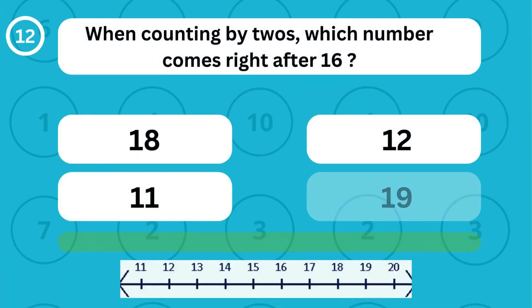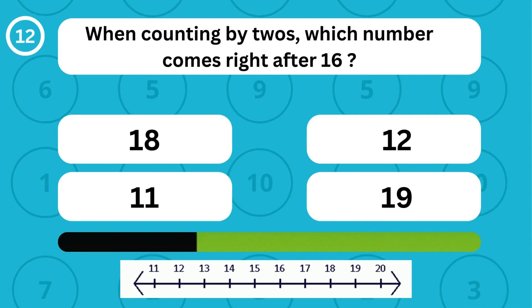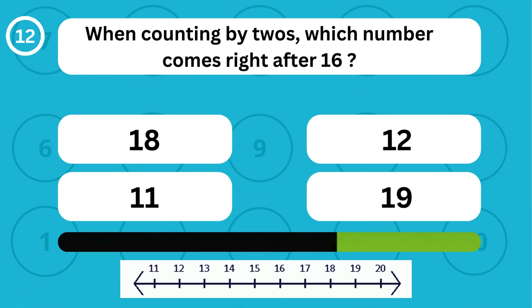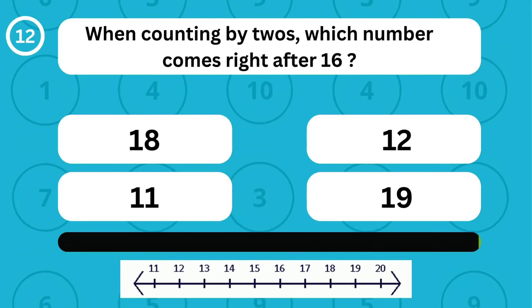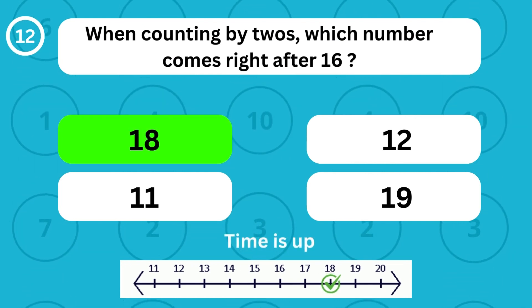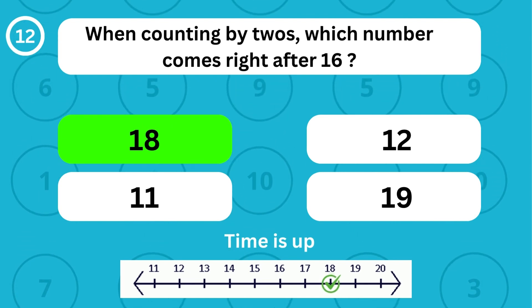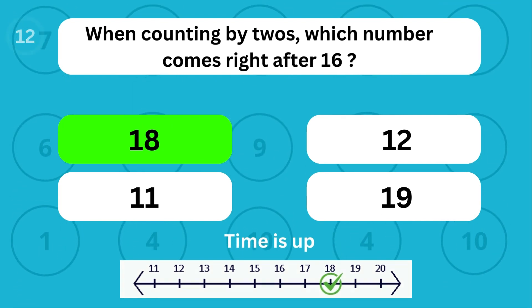When counting by twos, which number comes right after 16? When counting by twos, the number 18 comes right after 16.